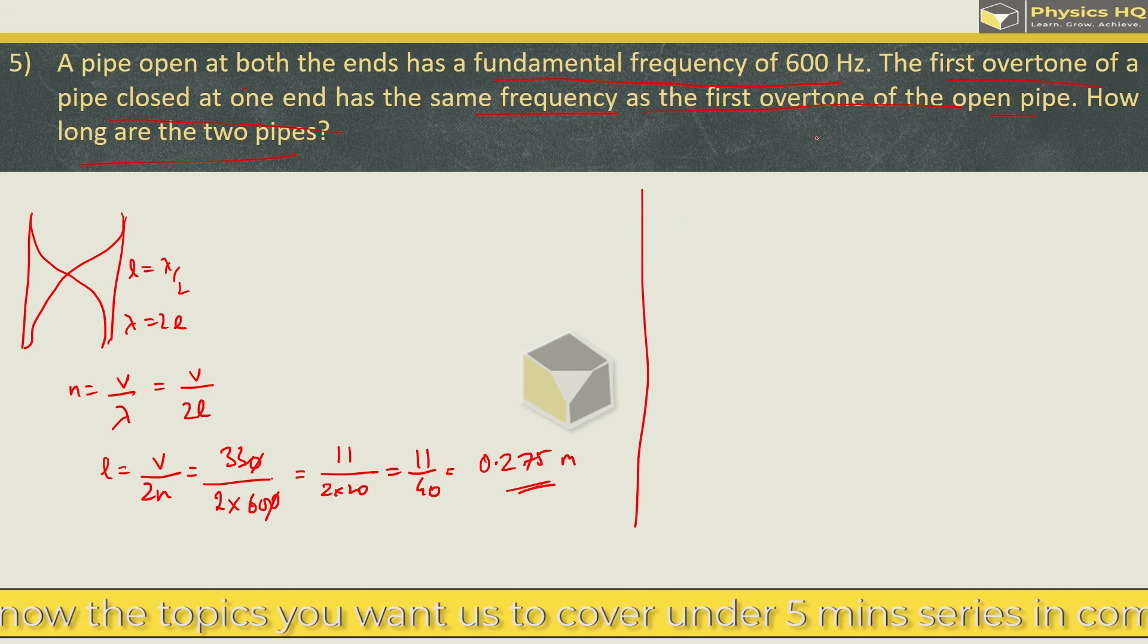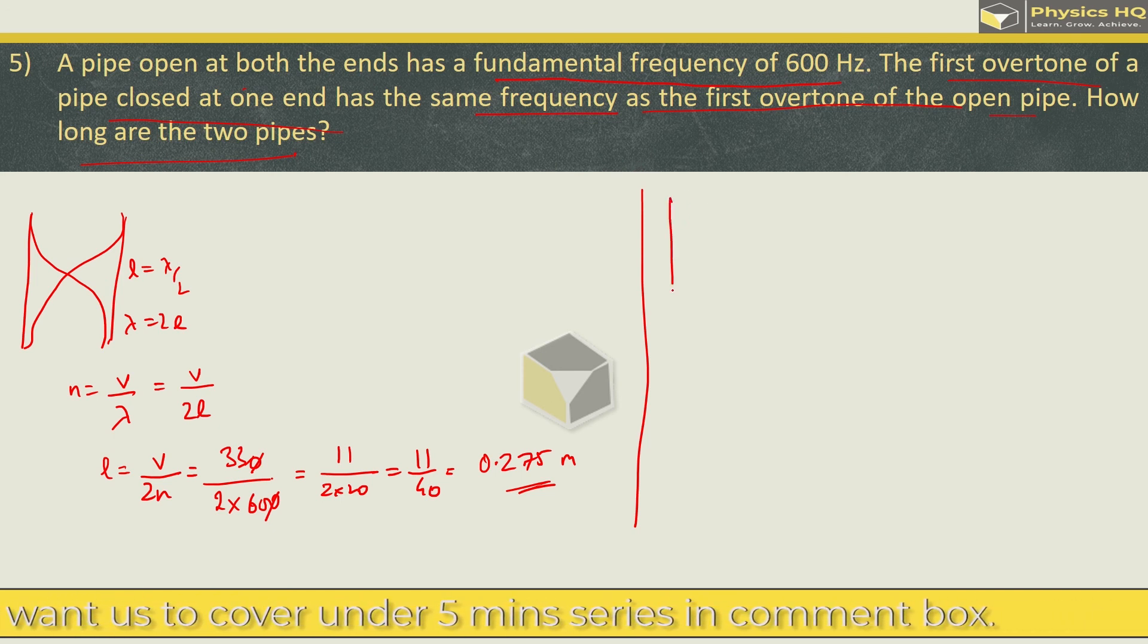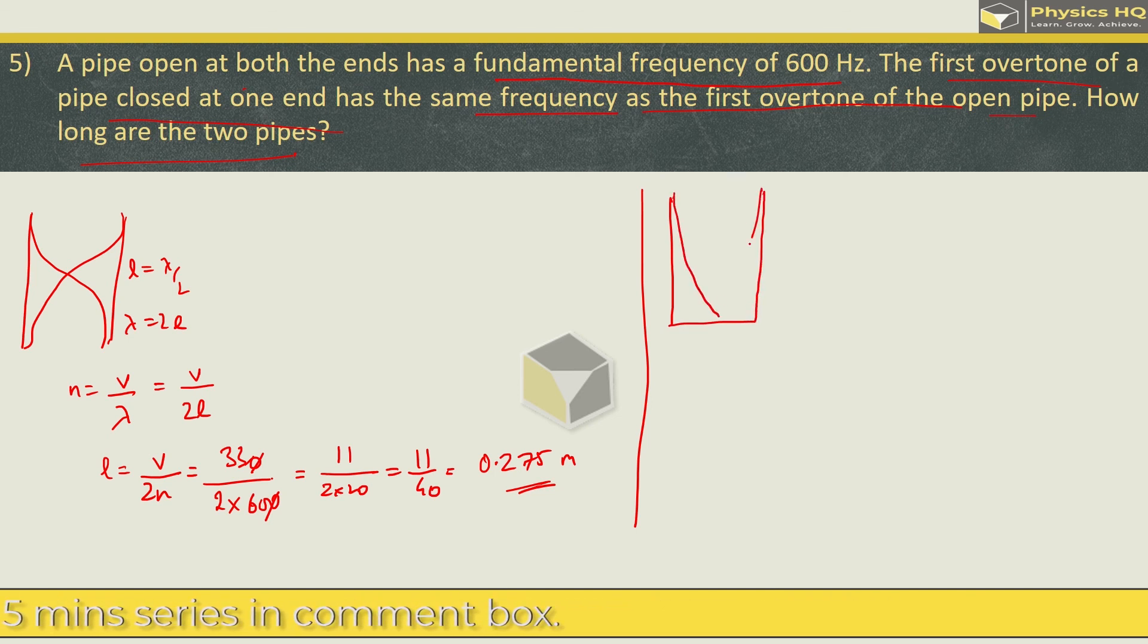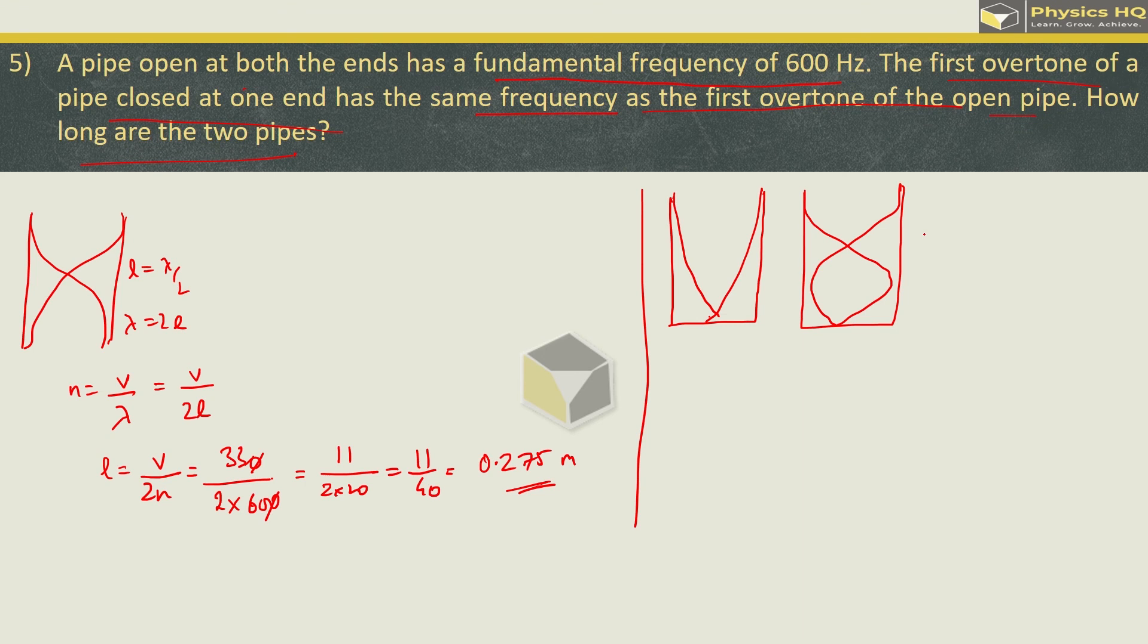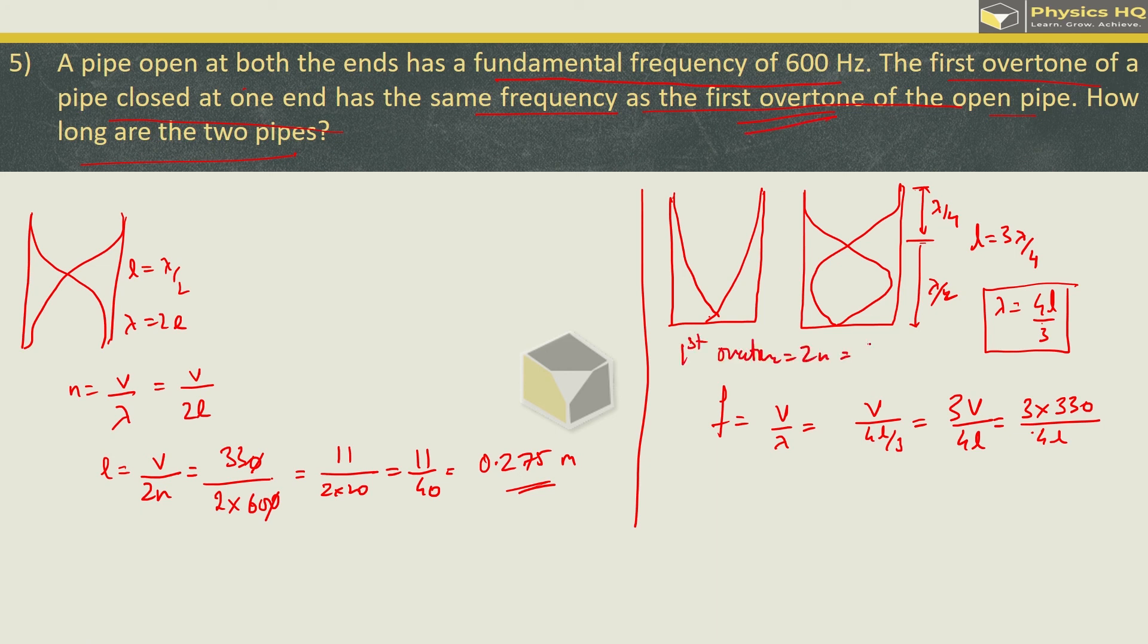Second case, first overtone of the pipe which is closed at one end. So closed at one end, this will be fundamental, but we don't have fundamental, we need first overtone. So first overtone, what is the next possibility? This one. So in this case, if you see, from here lambda by 4, from here lambda by 2, and from antinode lambda by 4. So total length lambda by 4 plus lambda by 2 plus lambda by 4 equals 3 lambda by 4. Or you can say lambda is equal to 4L by 3. Let us put it in the formula. So frequency V by lambda, which is equal to V by 4L by 3, or 3V by 4L. Let us put the values, velocity as 330. Now remember, frequency first overtone, this will be twice the fundamental frequency, 2 into 600.